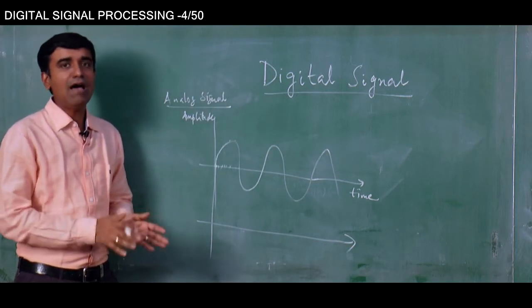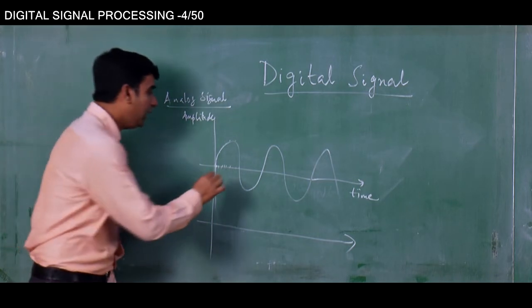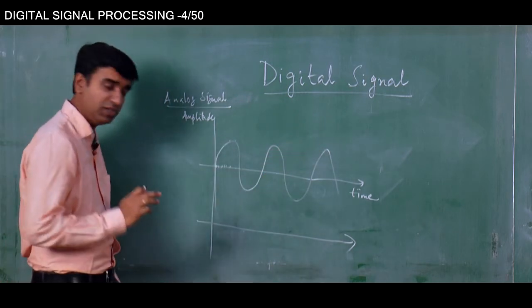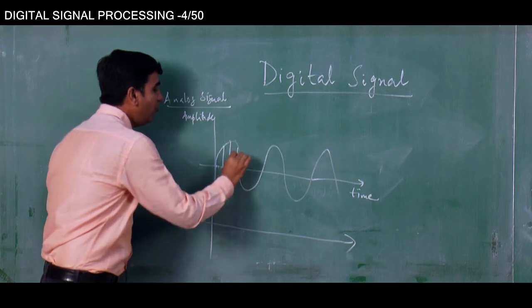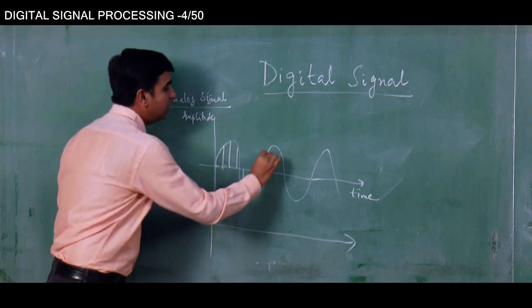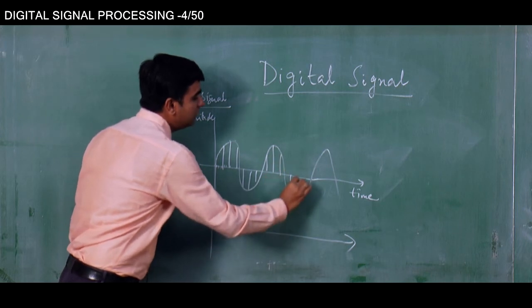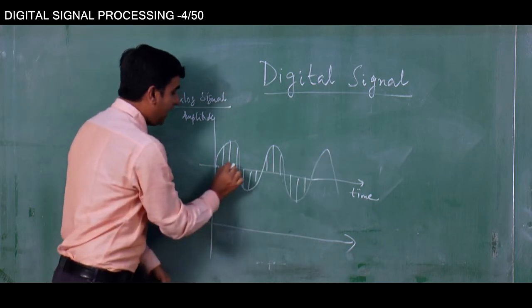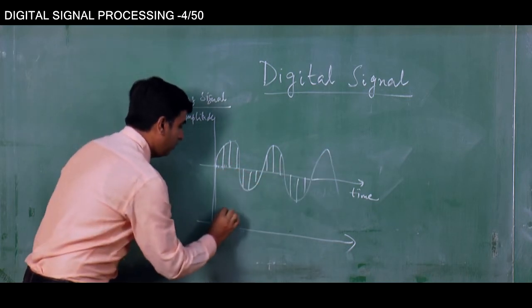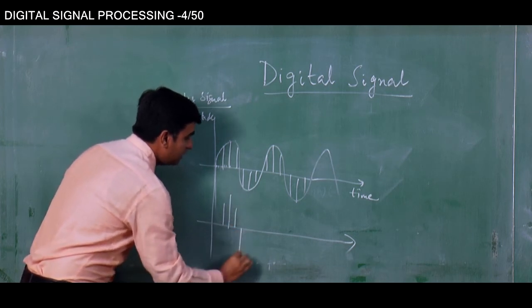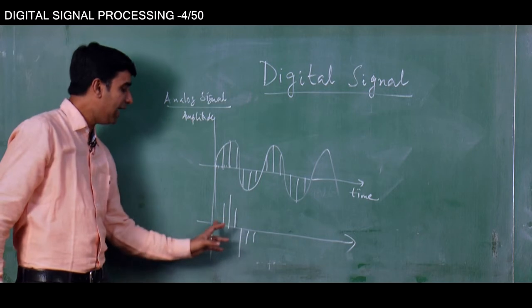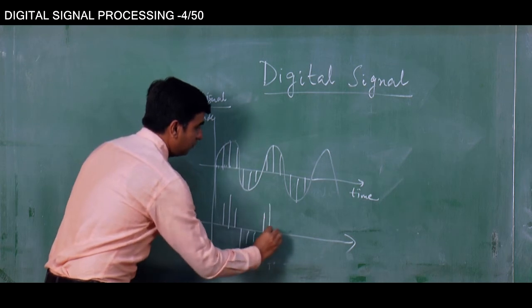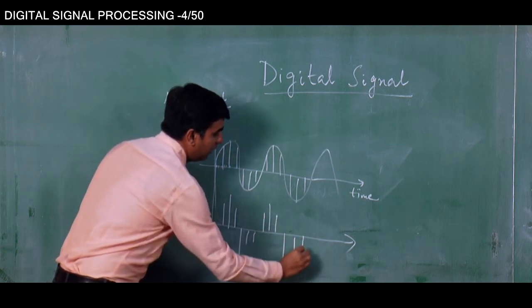In other words, a digital signal is an analog signal sampled in time — that means we are taking, suppose this is a continuous analog signal, if you take out some values at some discrete time instances then it becomes a digital signal. I have sampled the analog signal at discrete instances of time; now let me plot it. These are the different values at different instances of time, and so this analog signal has now become a digital signal.